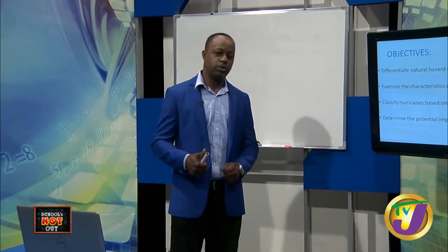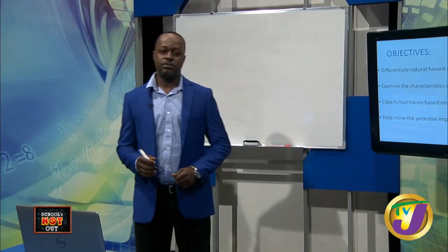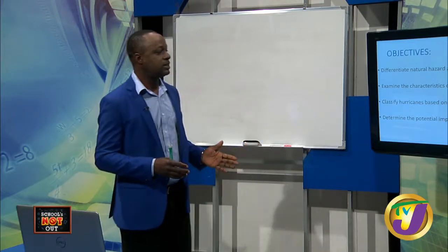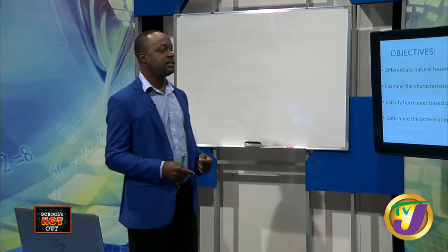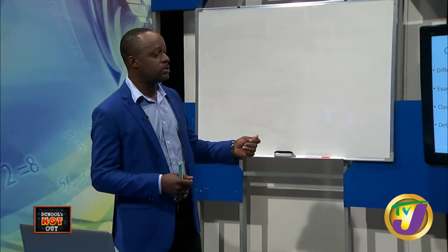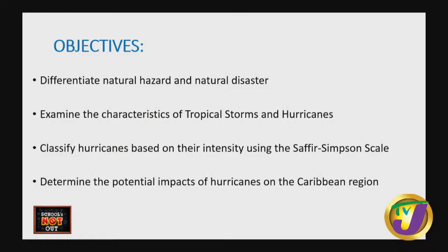Here are our objectives for today from the CSEC syllabus. We're going to differentiate between natural hazards and natural disasters. We'll also look at the characteristics of tropical storms and hurricanes, classify hurricanes based on their intensity using the Saffir-Simpson hurricane scale, and determine the potential impacts of hurricanes on the Caribbean region.